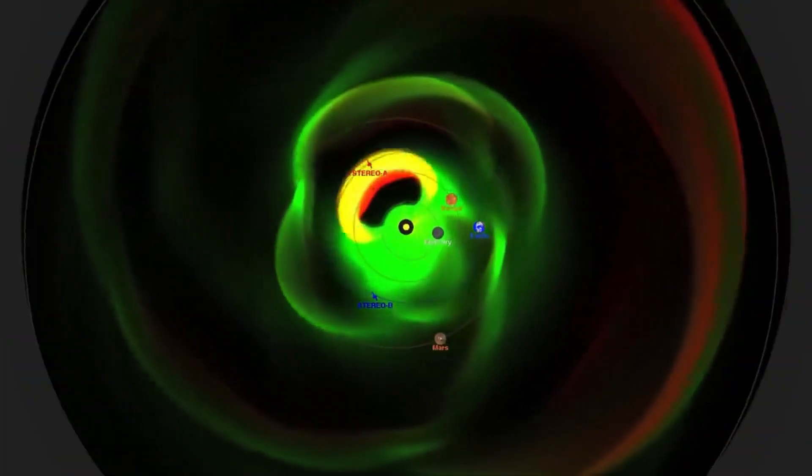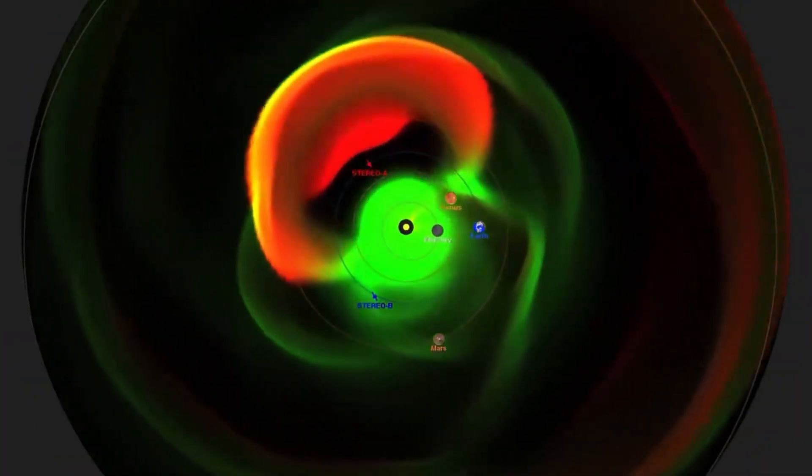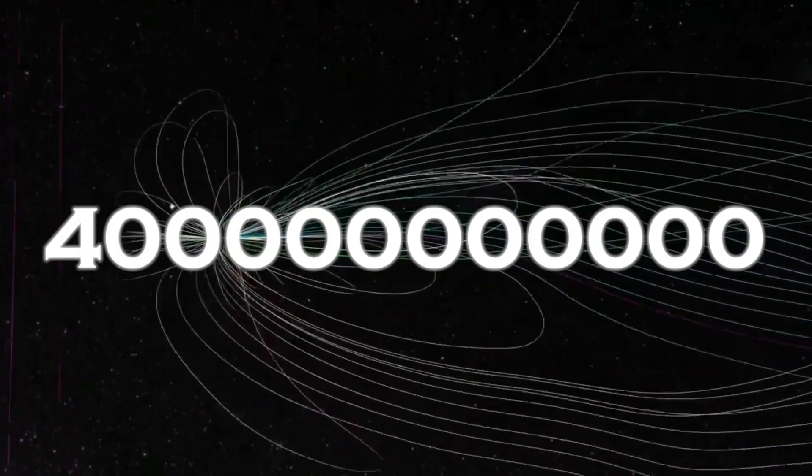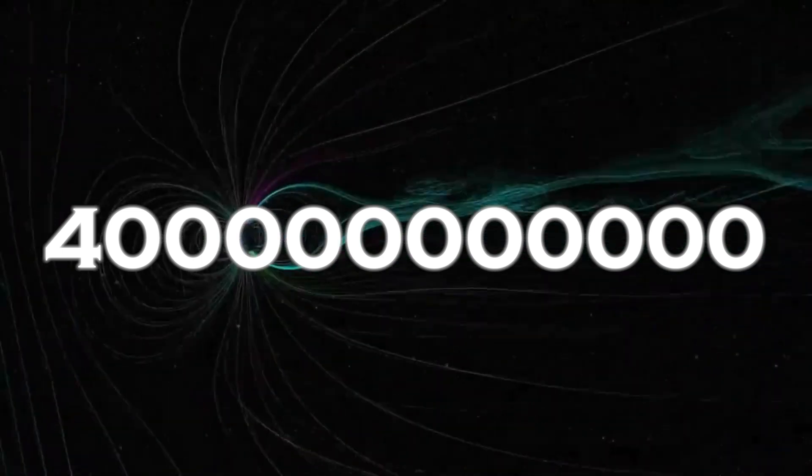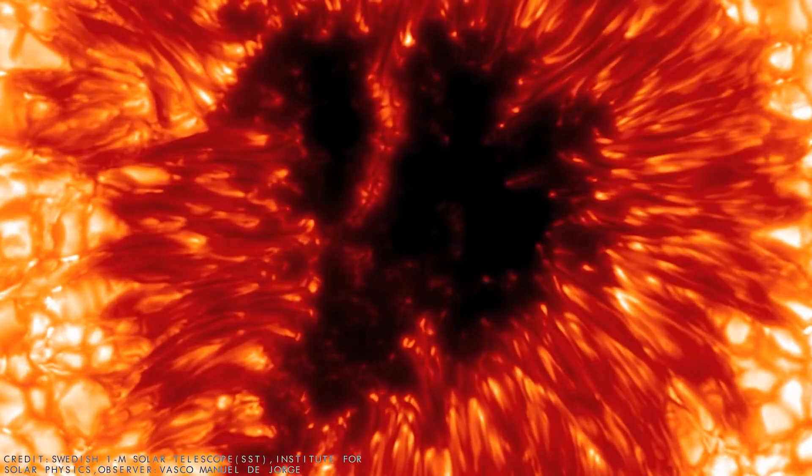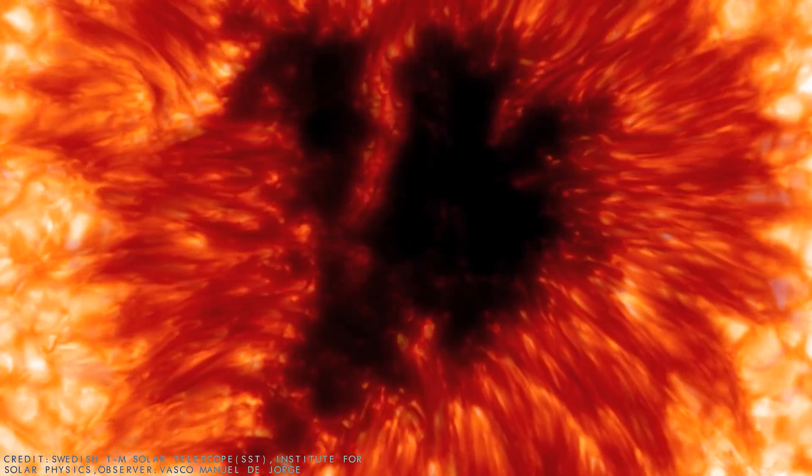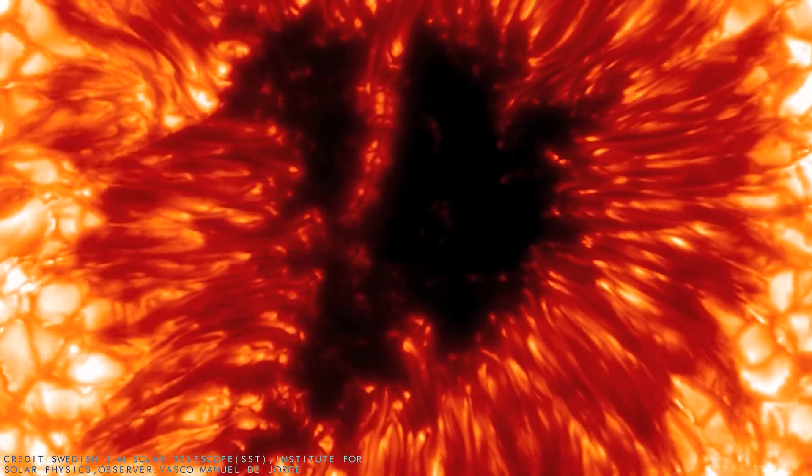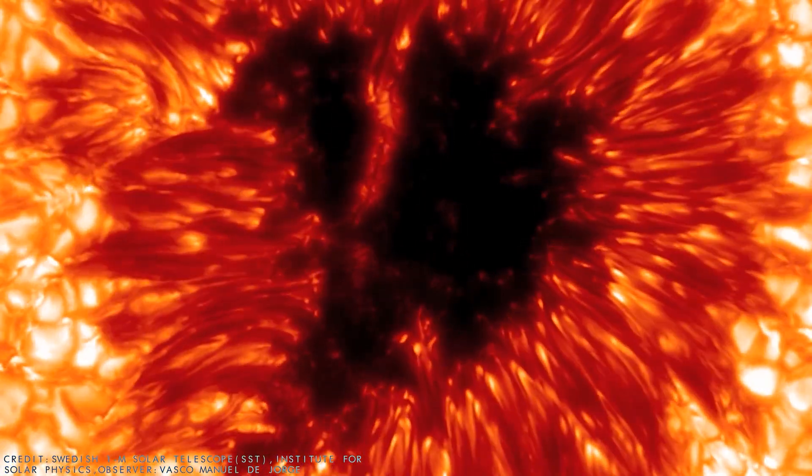Betelgeuse's corona surprised scientists by ejecting an amount of mass 400 billion times greater than the average coronal mass ejection. This cloud of hot gas released by the star temporarily covered some of its light, leading to the unusual dimming observed.